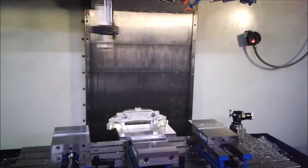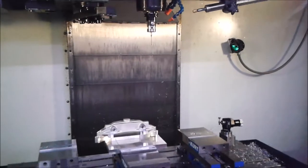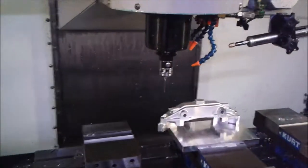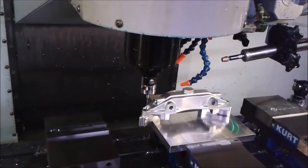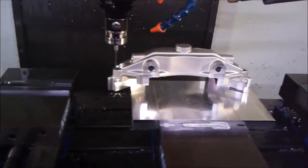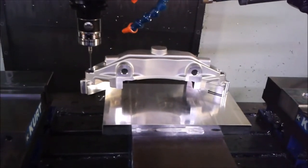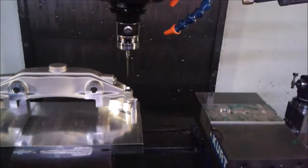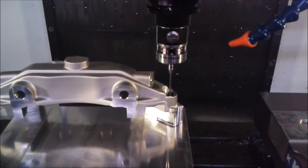So once again for demonstration, we're going to show how it goes through the same cycle where it probes the first hole, finds the center and sets the new origin. From there it's going to move to the second hole, probe the second hole and find the angular error from the programmed position.